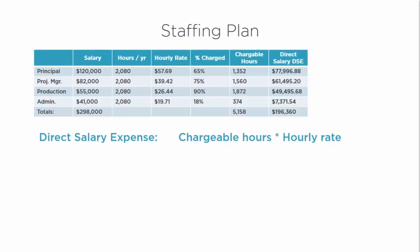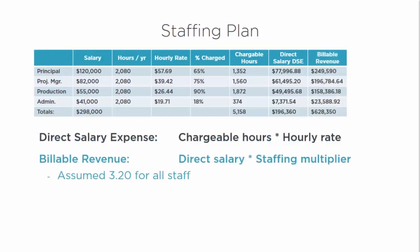Your direct salary expense equals chargeable hours times your hourly rate. Taking the chargeable hours column and multiplying by the hourly rate gives your direct salary expense. Where we had a total of $298,000 for overall salary, we only have $196,360 for our direct salary expense.